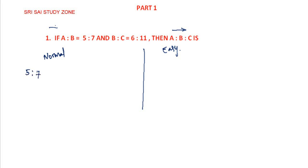a is to b value is 5 is to 7. b is to c is 6 is to 11. Here, the b values are 7 and 6. Since b cannot be added directly, we need to make b equal. The value here is 7 and 6.